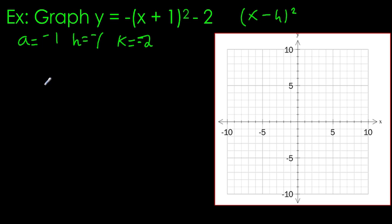So now we go ahead and write our mapping rule. So x, y goes to x minus 1, negative y minus 2. So there's my a value right there, my negative. Don't forget about the negative 1. My h and my k.